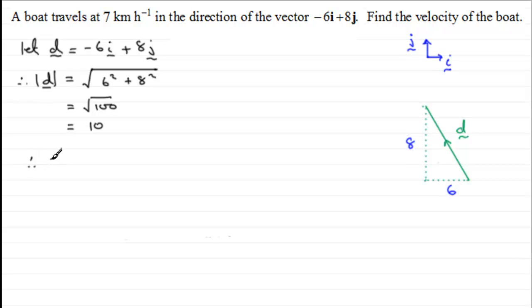Therefore, the velocity vector v equals 7 over 10, 7 tenths of our direction vector minus 6i plus 8j. We could leave it like that, or you might want to expand it out. So 7 tenths of minus 6i: 7 times 6 is 42 divided by 10, so it's minus 4.2 in the i direction. And then 8 times 7 is 56, divided by 10 is 5.6 j. And there's our velocity vector.